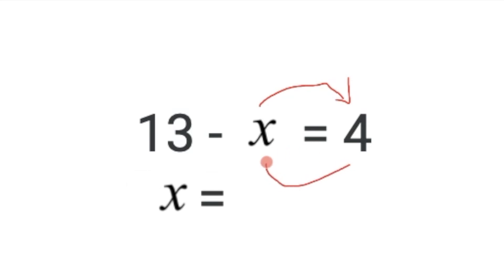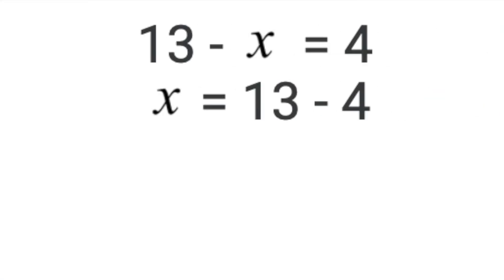And then I'm going to take this positive 4, and I'm going to move it to the other side of the equation, which now makes it negative 4. And when I rewrite this with the x first, I'm left with x equals 13 subtract 4.